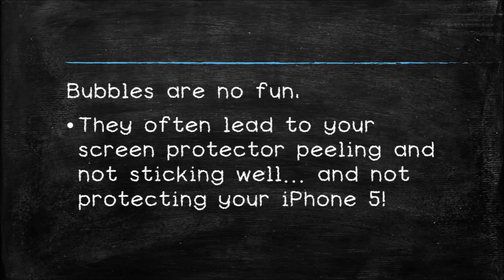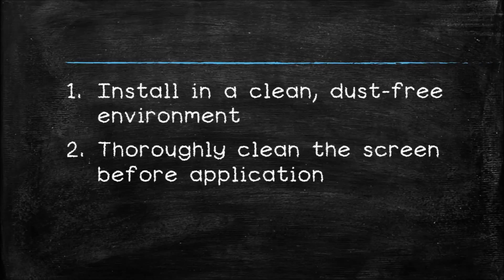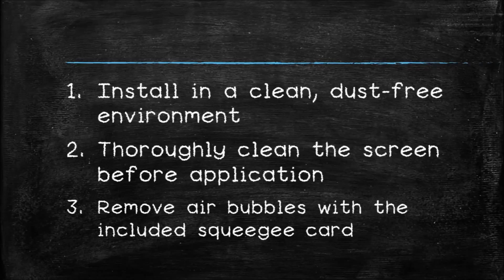So to avoid getting these bubbles on your glass, here's the process to follow. First of all, make sure you are installing the screen protector in a clean, dust-free as possible environment. Thoroughly clean the phone's glass with a microfiber cloth to ensure no lint or dust particles are left on the screen. Oftentimes I'll even blow on the screen after cleaning it with a cloth just to ensure nothing's left. After you've applied the screen protector to your phone, use a squeegee card or a credit card wrapped in the cleaning cloth to smooth out the air bubbles.